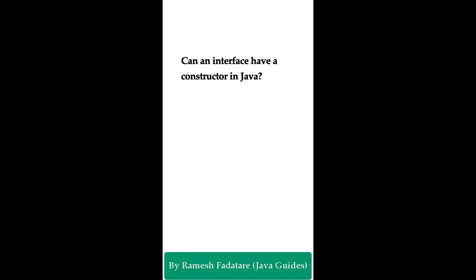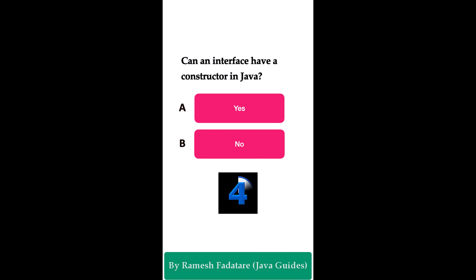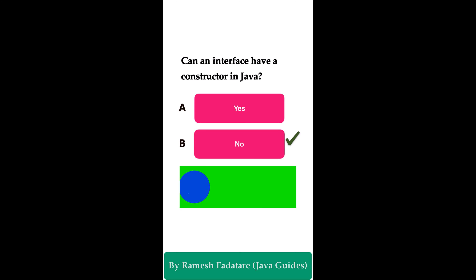Can an interface have a constructor in Java? Option A: yes. Option B: no. The correct answer is no. Interfaces cannot have constructors because they cannot be instantiated. To create an object, a class must have a constructor. Since interfaces cannot be instantiated, they cannot have constructors. To use an interface, you must create a class that implements the interface — then you can create objects of that implementing class.